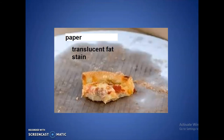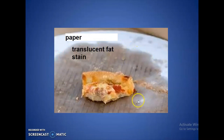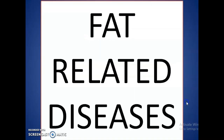We can conclude that a food item which creates a translucent stain on the paper contains fat as one of its food components. As you can see, the food item is kept on the paper and the area surrounding it has become translucent — this means the food item contains fat.